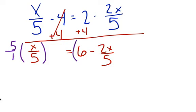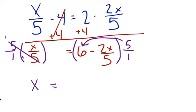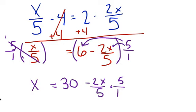So I'm going to multiply this side by 5 and I'm going to multiply this side by 5. When I do 5 over 1 times x over 5, these 5s cancel to give me 1, and I'm left with x. Over here I get 5 times 6, which is 30. And then negative 2x over 5 times 5 over 1 — these 5s cancel each other out. So now I have x equals 30 minus 2x.